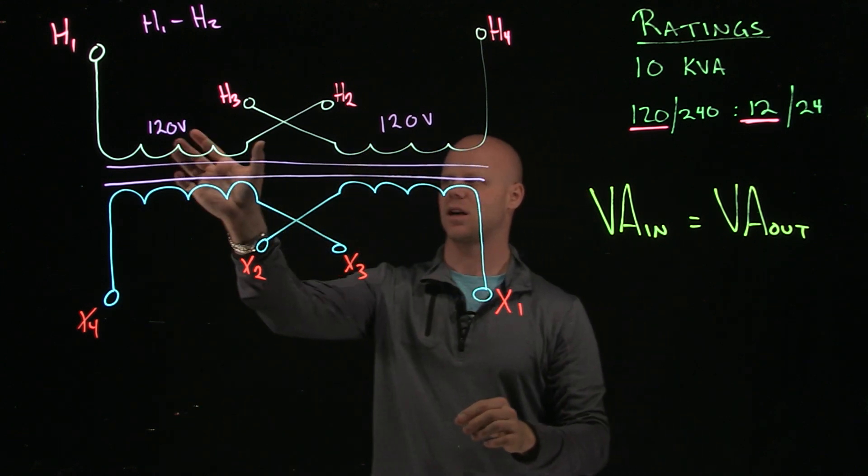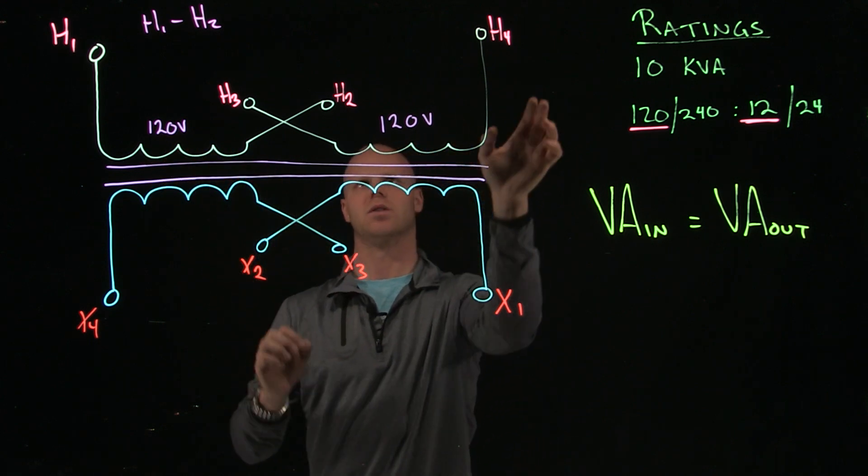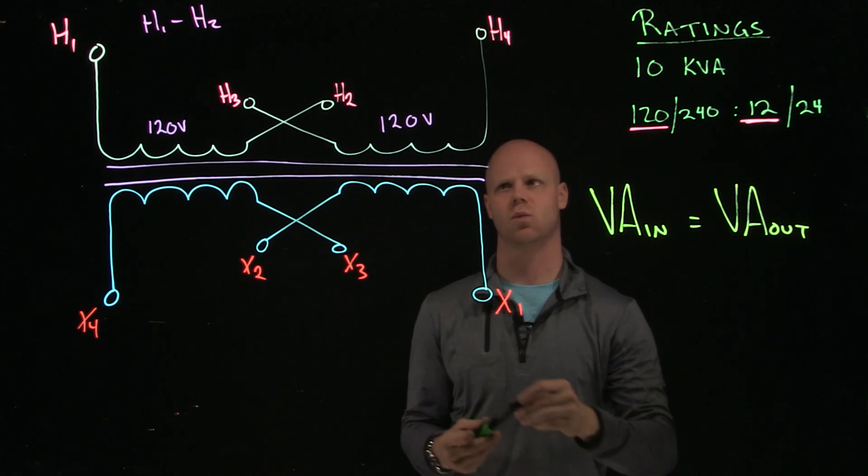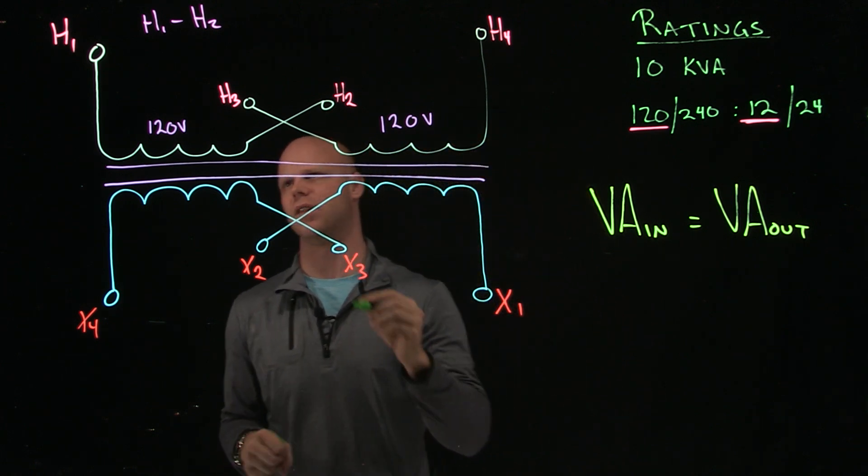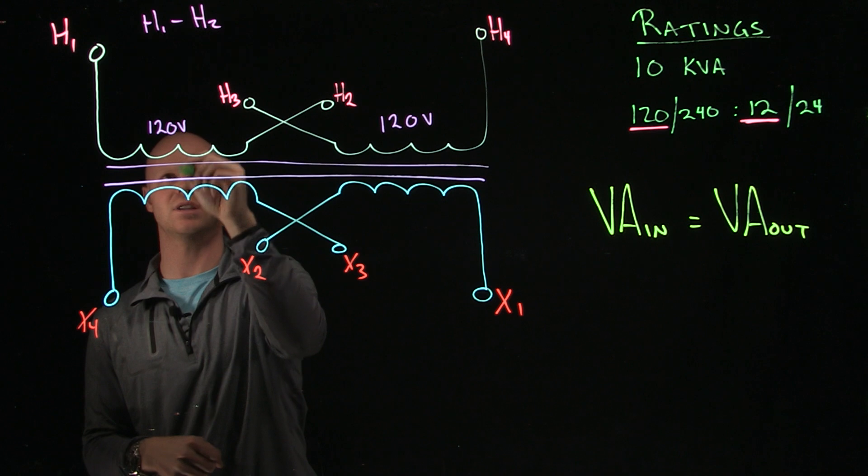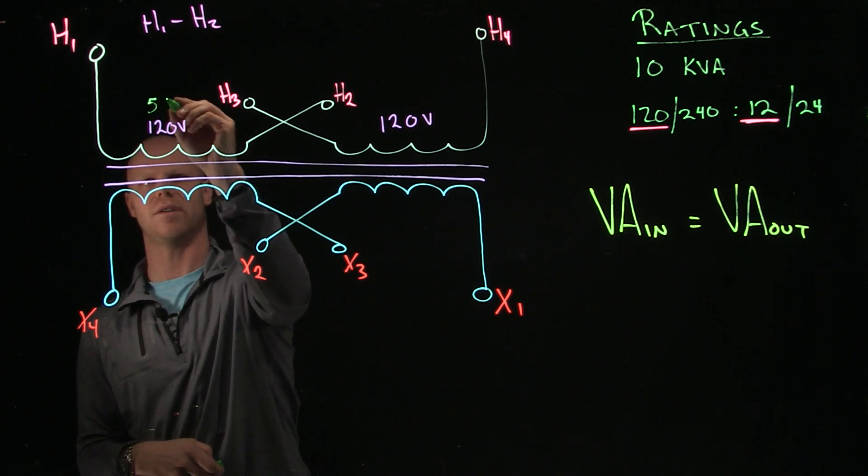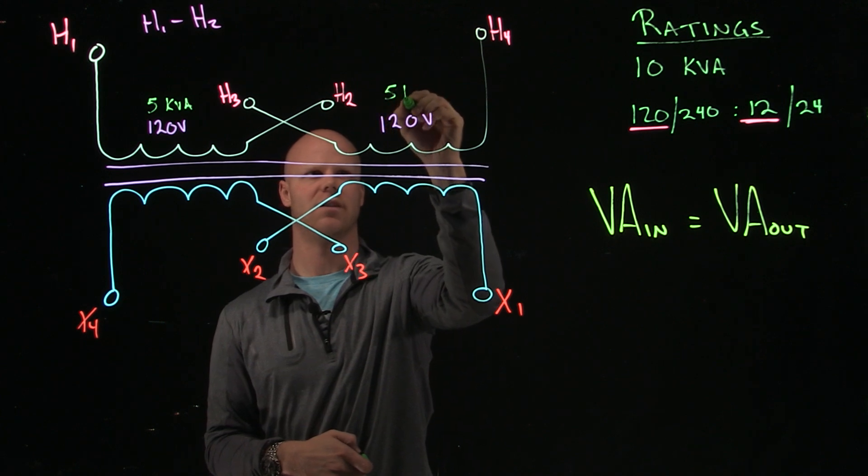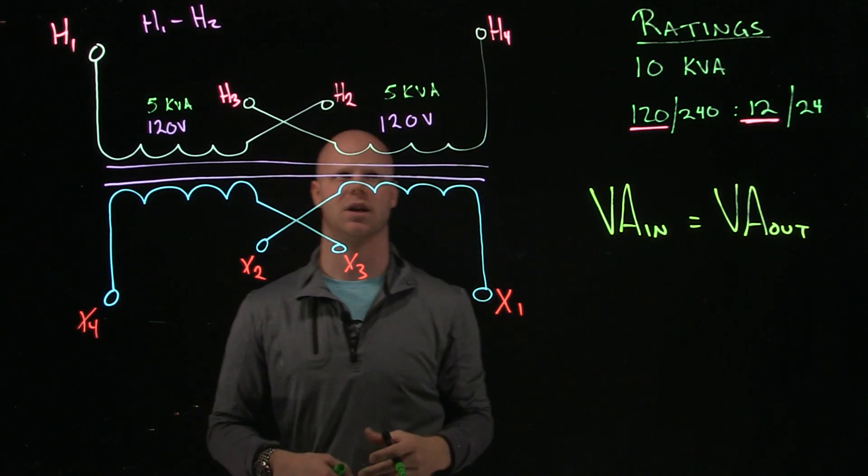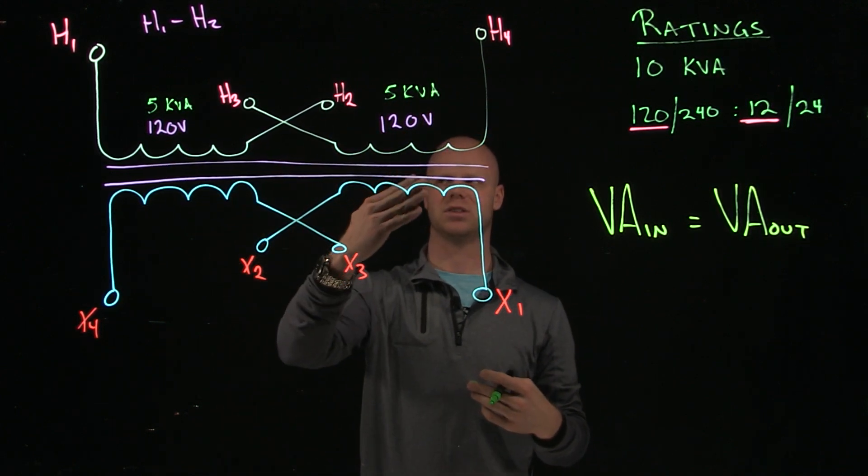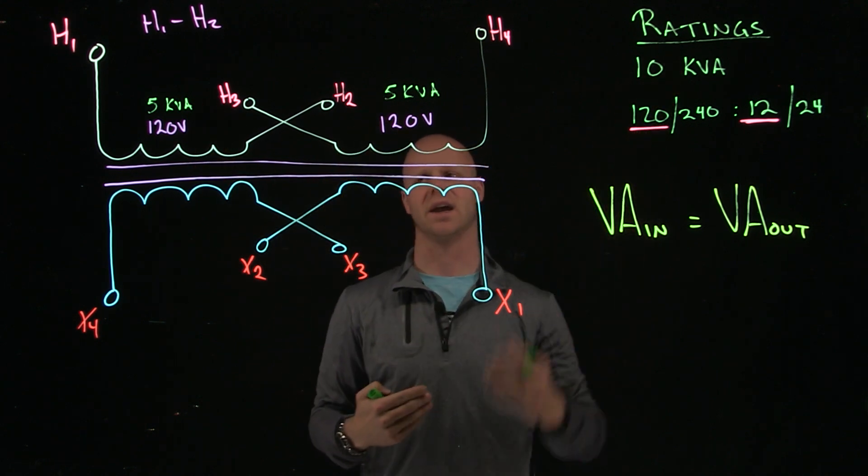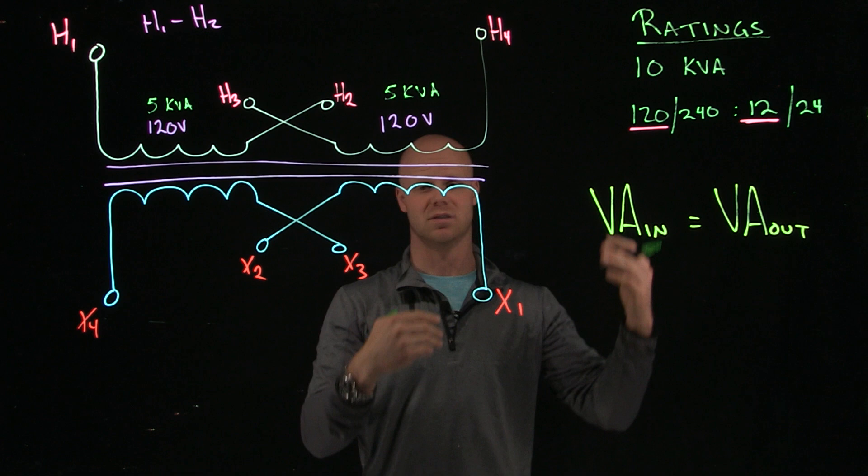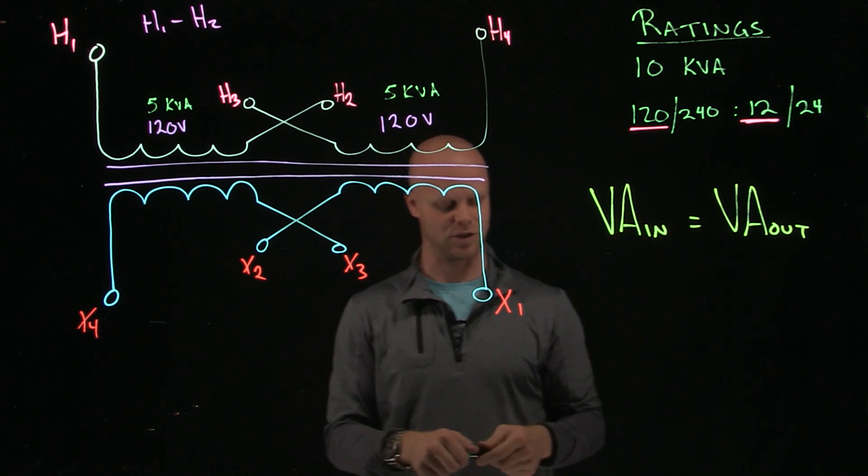So if that has 120 volts, this has 120 volts. My entire H side is good for 10 kVA, that means each winding will share that VA. So just this one winding will have a 5 kVA rating, and this will be a 5 kVA rating for this winding. Now it doesn't matter. If I wire them in series, 5 plus 5 is still 10. If I wire them in parallel, 5 kVA plus 5 kVA is still 10 kVA. Everything is still true.